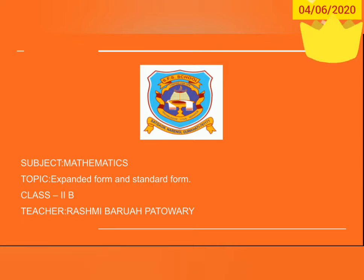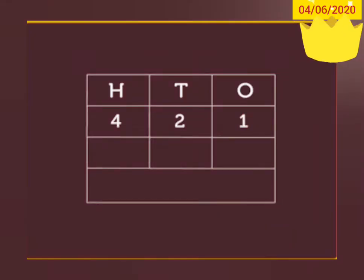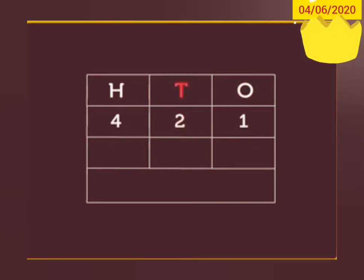Dear children, consider the number 421. Here, digit 1 is in the 1's column, digit 2 is in the 10's column, and digit 4 is in the 100's column.